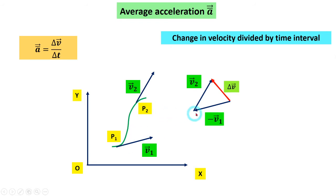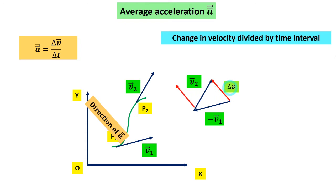We have the time interval and the change in velocity, giving us the average acceleration and its direction. The direction of the average acceleration is the same as the direction of the change in velocity delta V. So the direction of the average acceleration is along this resultant delta V.